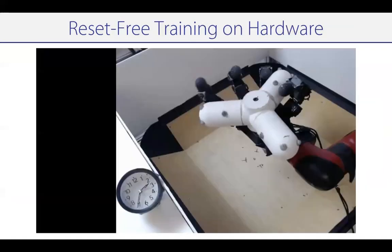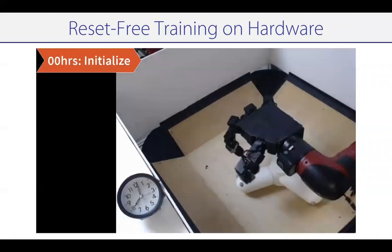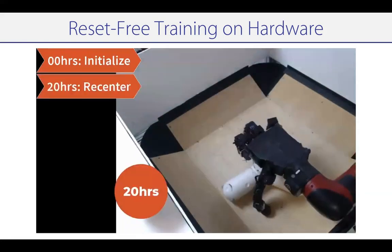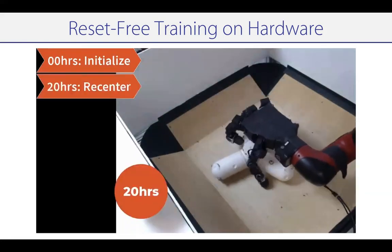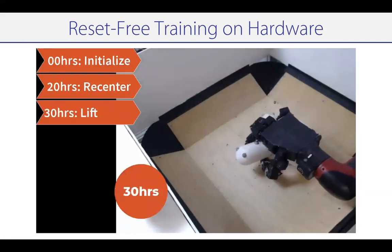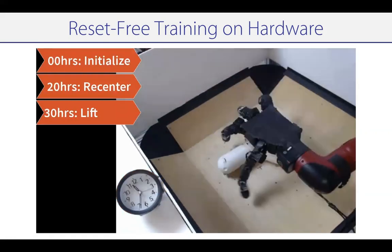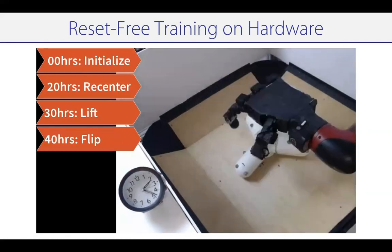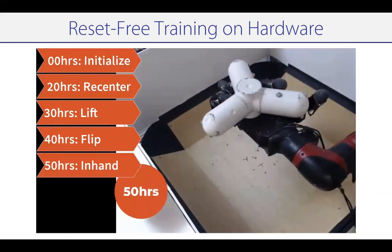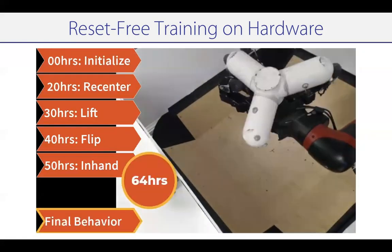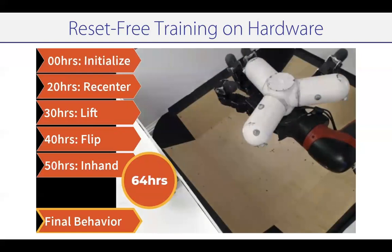The overall training procedure looks as follows. The object starts off in the palm but quickly falls out. We then spend a long time figuring out how to recenter the object in the middle of the arena so we can try doing lifting. In around 20 hours, we can successfully recenter the object. After this, we practice lifting with resets coming from the recentering policies. Once lifting is mastered, we can learn to do flipping in the palm. And once we've been able to flip the object over, we can practice in-hand manipulation. After around 65 hours, we can successfully put the object in the palm and perform in-hand manipulation.